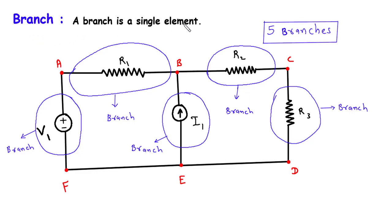A branch is a single element. Here we can see in this circuit there are total 5 branches. Why there are 5 branches? Because there are total 5 elements in this circuit — a voltage source, a resistor, a current source, and two more resistors. So therefore there are total 5 branches in this circuit.